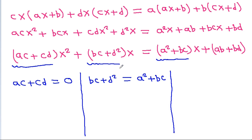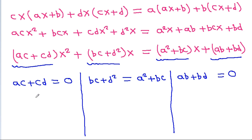On the left-hand side the constant term is 0, and on the right-hand side the constant term is ab + bd. That means ab + bd = 0.